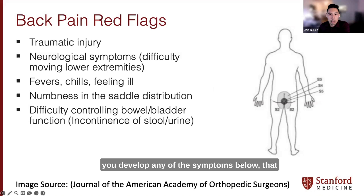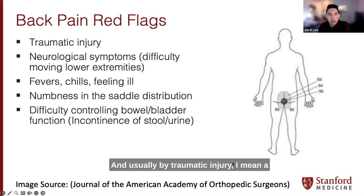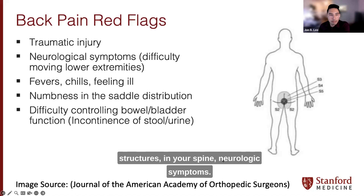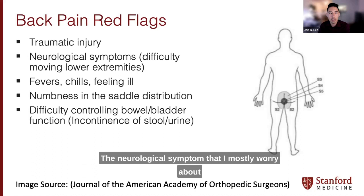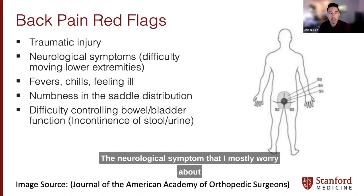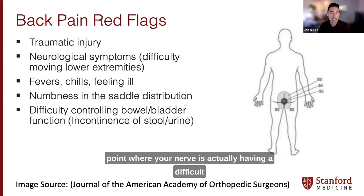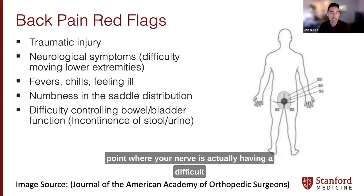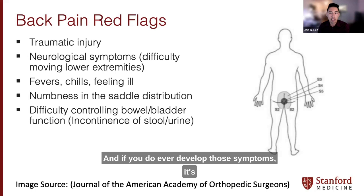The first red flag is traumatic injury. If you had a recent significant fall or car crash and develop new symptoms, that increases my suspicion that something more dangerous may be going on. Next is neurologic symptoms — when a nerve is irritated, numbness, tingling, and pain are common. The neurological symptom I worry about most is lower extremity weakness, where the nerve is being pinched to the point of having difficulty sending motor signals telling your legs to move. Always talk to your doctor right away if you develop those symptoms.